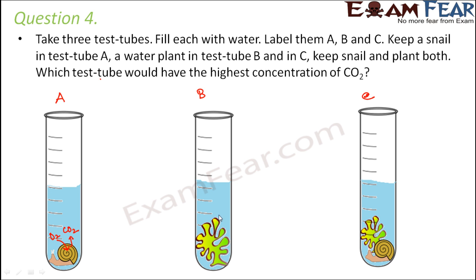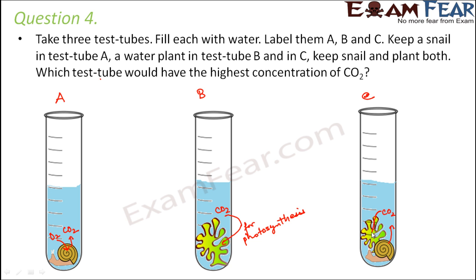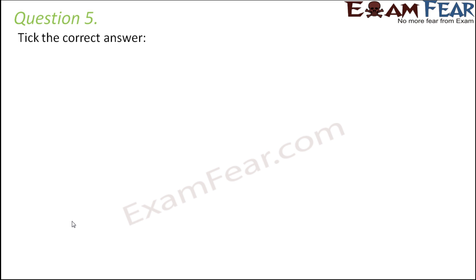In test tube B, you just have a plant, and plants take in carbon dioxide for photosynthesis, so the plant will utilize the carbon dioxide. Animals do not perform photosynthesis, so they do not utilize carbon dioxide. In test tube C, even though the snail releases carbon dioxide during respiration, that carbon dioxide is utilized by the plant for photosynthesis. So overall, test tube A will have the highest concentration of carbon dioxide, because there is nobody to utilize what the snail releases.